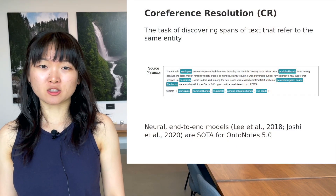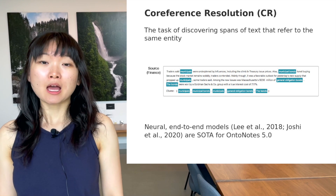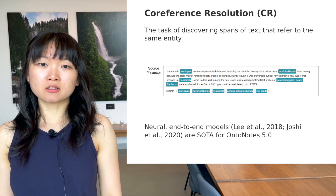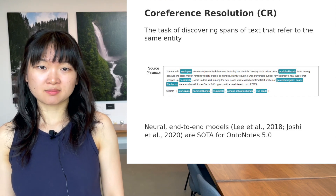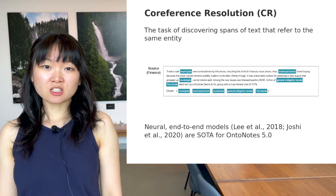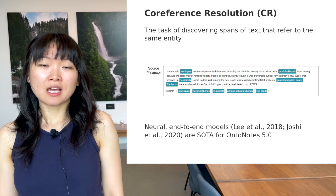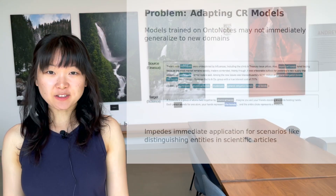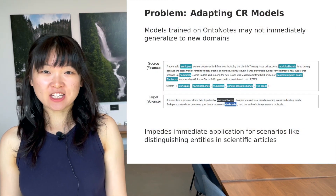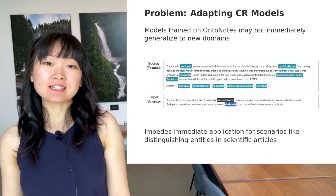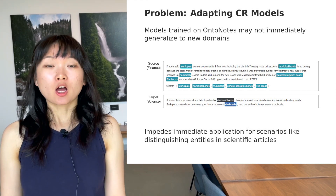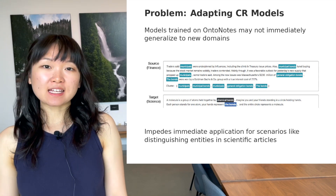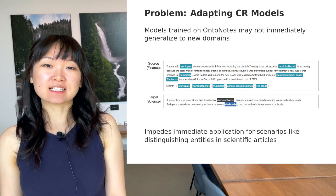A coreference resolution model is certainly a challenging problem. But nowadays, neural models can achieve high accuracy on commonly used datasets such as OntoNotes. Researchers have trained their models on OntoNotes and made them publicly available for others to use. However, these models may not immediately generalize to new domains. In this example, the span 'the bonds' no longer refers to municipal bonds — instead, it links to chemical bonds in the science domain.